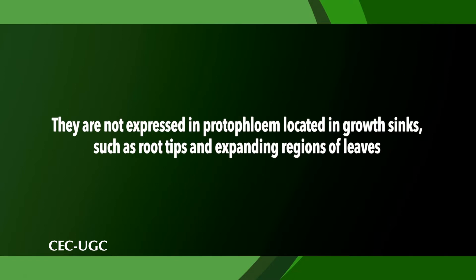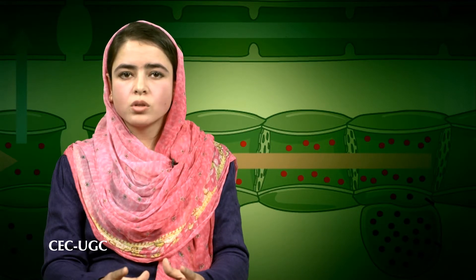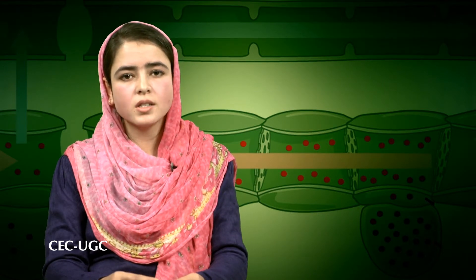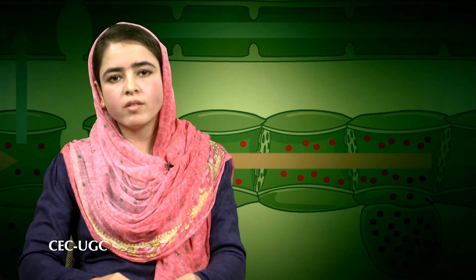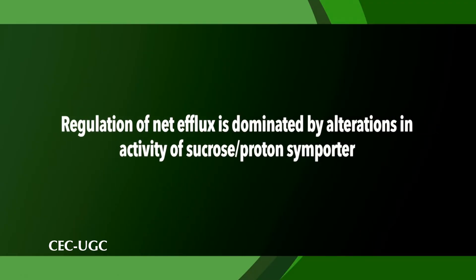However, they are not expressed in the protophloem located in growth sinks such as root tips and expanding regions of leaves. Thus, net sucrose efflux from the sieve element companion cell complexes is governed by the difference between the rates of passive leakage and sucrose-proton symporter retrieval. Regulation of net efflux is dominated by alterations in the activity of the sucrose-proton symporter. There is a growing body of evidence that the symporter is turgor-regulated, though the mechanism of turgor regulation is yet to be elucidated, but may be mediated through modulation of H⁺-ATPase activity and hence the proton motive force for sucrose uptake.